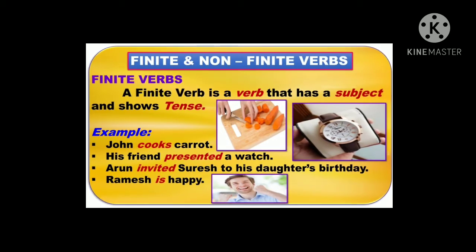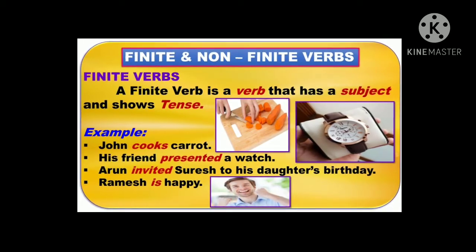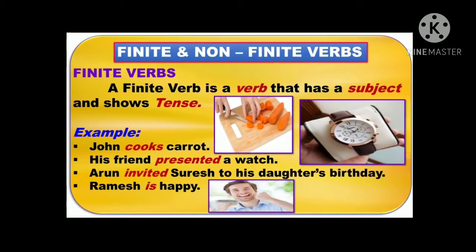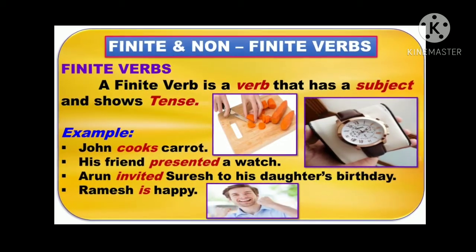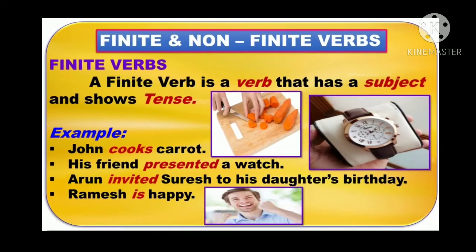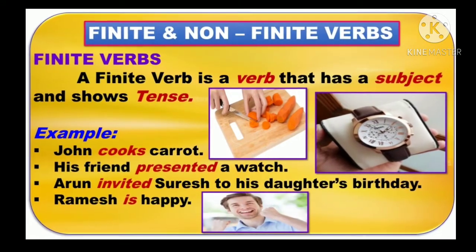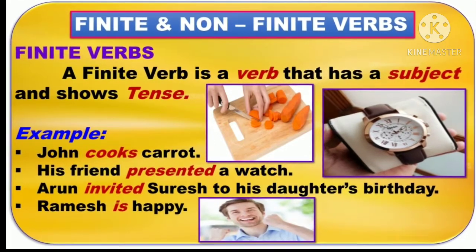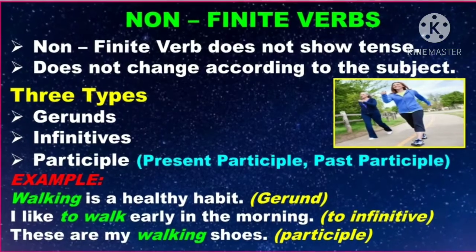Let's learn about finite and non-finite verbs. What is a finite verb? A finite verb is a verb that indicates tense and changes according to the subject. It has a subject and shows tense. Examples: 'John cooks carrot,' 'His friend presented a watch,' 'Arun invited Suresh to his daughter's birthday,' 'Ramesh is happy.' The highlighted words are verbs indicating tense. The verbs 'cooks' and 'is' show present tense, and in the second and third sentences the highlighted words are in the past tense.